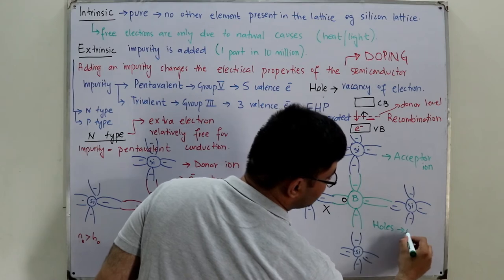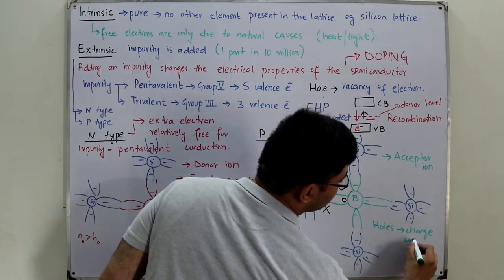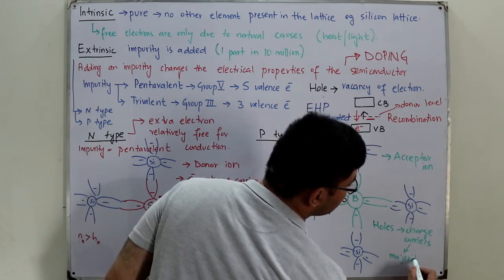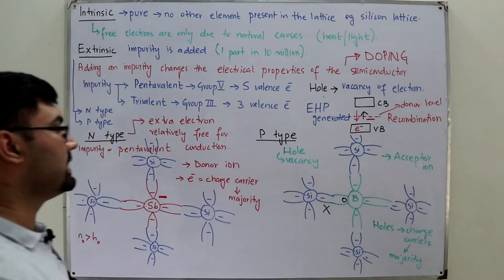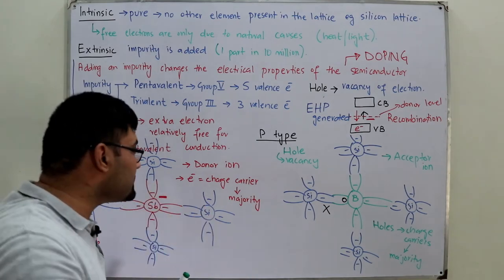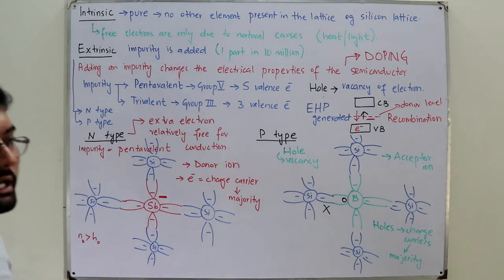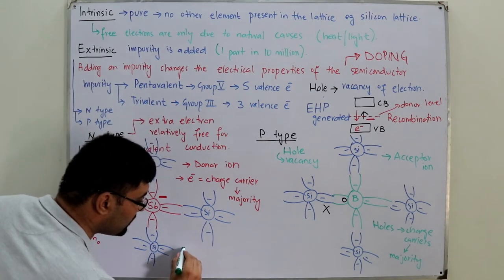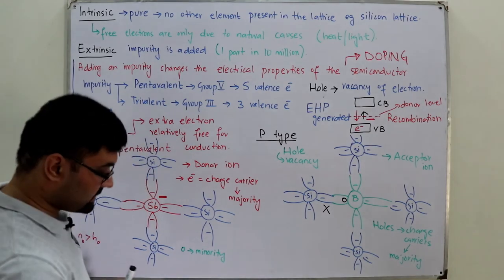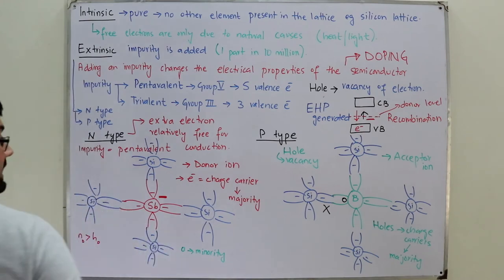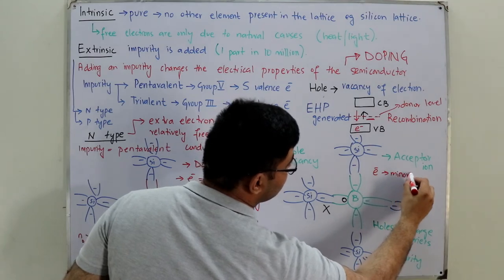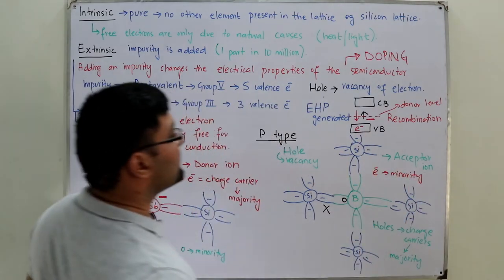In p-type material, holes are the majority charge carriers — the charge carrier mainly responsible for current. Electrons from natural causes such as heat are in the minority, so electrons are the minority charge carriers in p-type material.